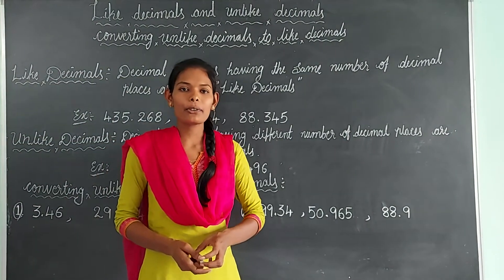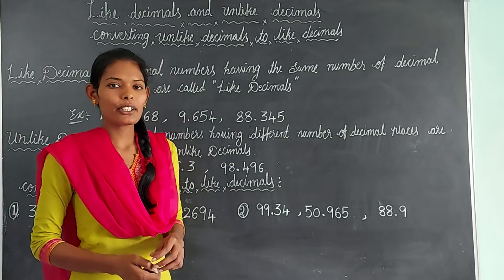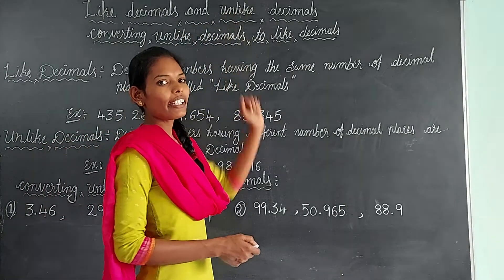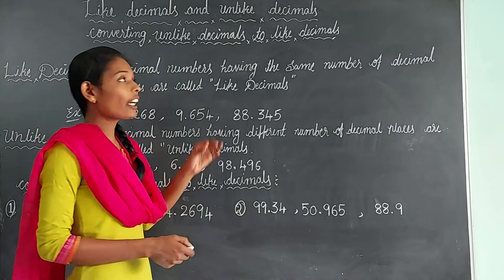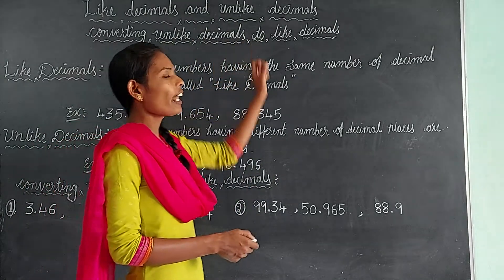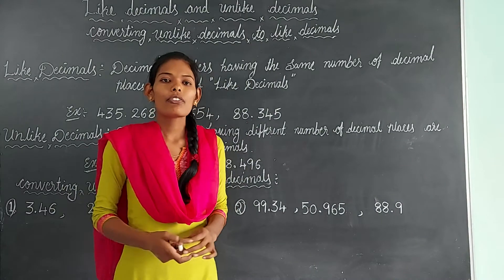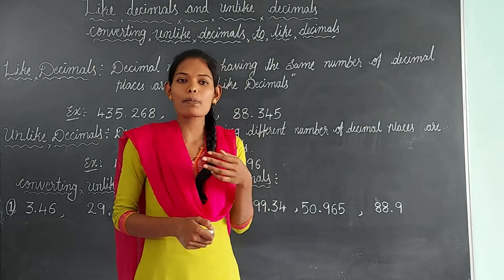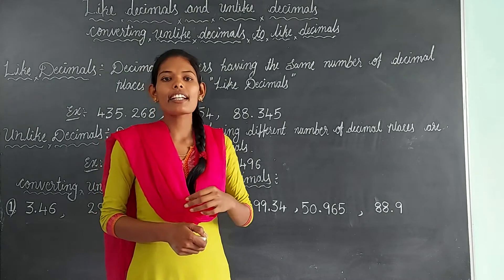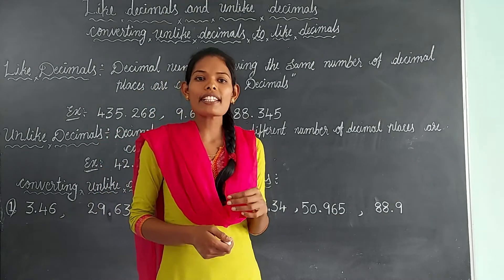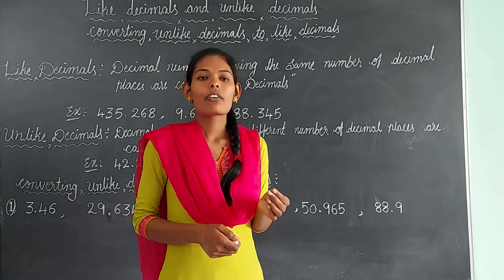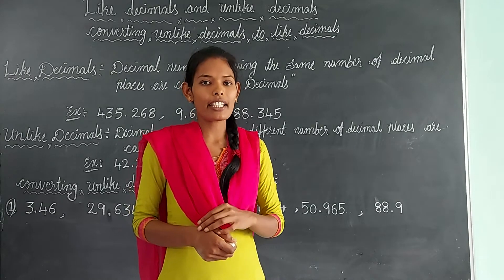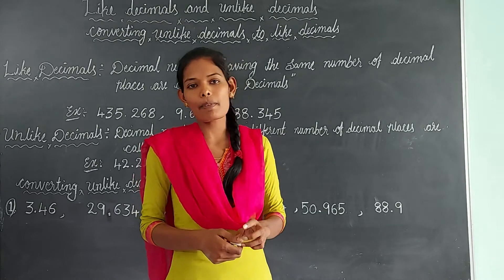Hello everyone, how are you? In this class we are going to study about what are like decimals and unlike decimals, and how to convert unlike decimals to like decimals. We already know that the number of digits after the decimal point are known as decimal places. Based on these decimal places, we can say whether the given decimals are like decimals or unlike decimals.